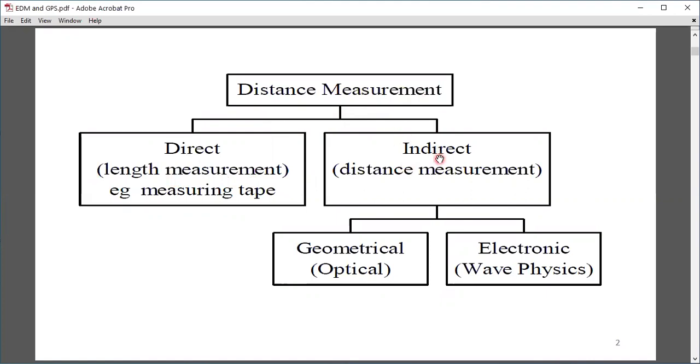Indirect measurement is further classified into two types: geometrical and electronic. In the geometrical method, we have optical light telescopes and distance measurement. In the electronic method, we measure distance with electronic waves using EDM devices.